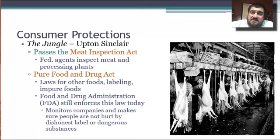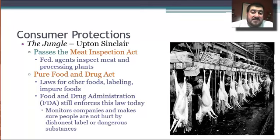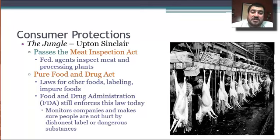For consumer protections, Roosevelt's major action came after The Jungle was published. The Jungle described the meat processing plants in the stockyards in Chicago. After this disgusted everybody in the country, he passes the Meat Inspection Act, requiring federal agents to inspect meat and processing plants. The Pure Food and Drug Act was also passed, creating laws for food labeling and impure foods. The Food and Drug Administration — the FDA — still enforces this law today and monitors companies to make sure people aren't hurt by products.